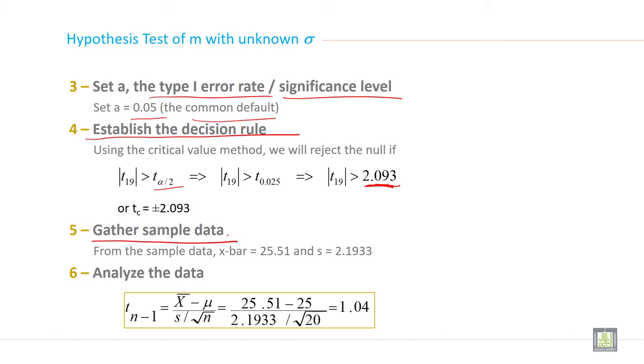And now step 6: analyze the given data. So T with degrees of freedom equals this, and when you solve this value, you will get T = 1.04.